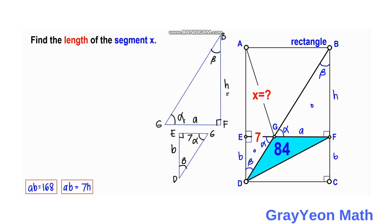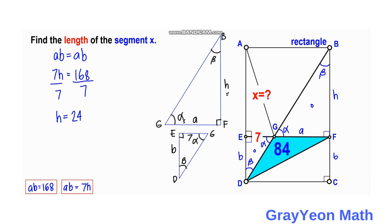Now we have two expressions for AB: from the area equation AB = 168, and from the similarity ratio AB = 7H. Setting them equal: 7H = 168. Dividing both sides by 7 gives H = 24 units.